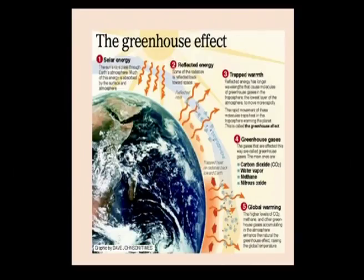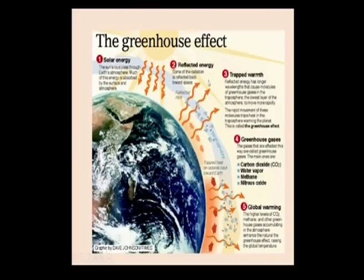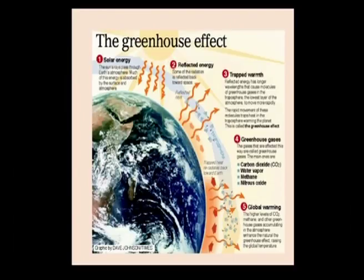Solar energy from the sun passes through the Earth's atmosphere; much of this energy is absorbed by the surface. Some energy is reflected back into space. The reflected energy has longer wavelengths that cause molecules of the greenhouse gases in the troposphere — the lowest layer of the atmosphere — to move more rapidly. The rapid movement of these molecules traps heat in the troposphere, warming the planet. This is called the greenhouse effect.